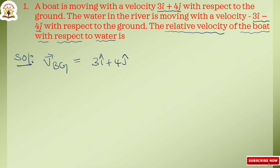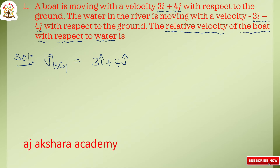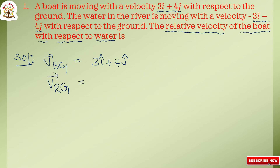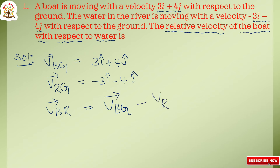The velocity of river with respect to the ground, Vrg, is given as minus 3i cap minus 4j cap. Now, Vbr equals velocity of boat with respect to ground minus velocity of river with respect to ground. That is equal to 3i cap plus 4j cap minus (minus 3i cap minus 4j cap).